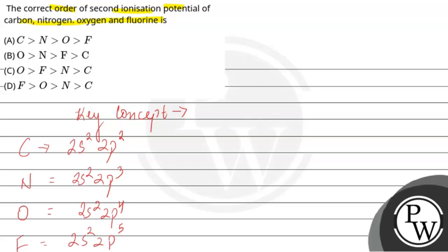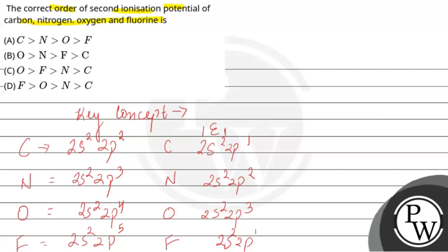For second ionization potential, we first consider the first ionization. After removing the first electron (IE1), the configurations become: carbon → 2s²2p¹, nitrogen → 2s²2p², oxygen → 2s²2p³, and fluorine → 2s²2p⁴.